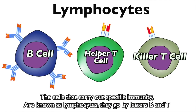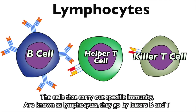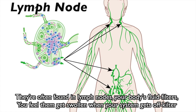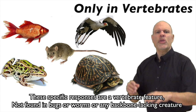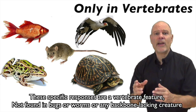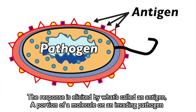The cells that carry out specific immunity are known as lymphocytes that go by letters B and T. They're often found in lymph nodes, your body's fluid filters. You feel them get swollen when your system gets off-kilter. These specific responses are a vertebrate feature, not found in bugs or worms or any backbone-lacking creature. The response is elicited by what's called an antigen — a portion of a molecule on an invading pathogen.